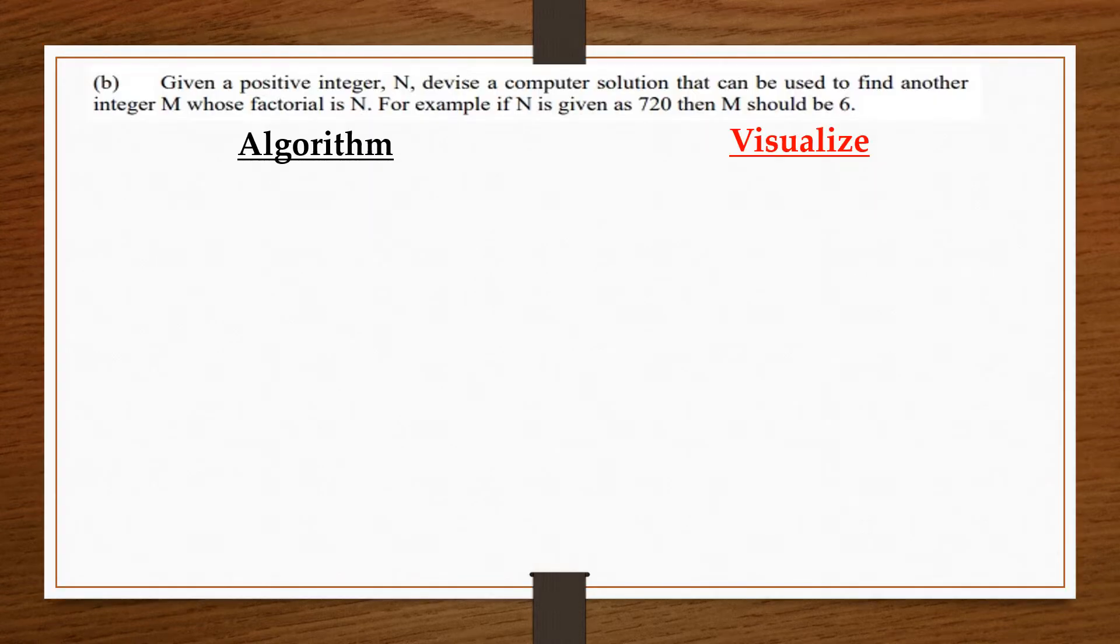Given a positive integer N, devise a computer solution that can be used to find another integer M whose factorial is N. For example, if N is given as 720, then M should be 6. Meaning, 6 factorial should give you 720. So, you are doing it the opposite way rather.